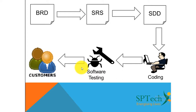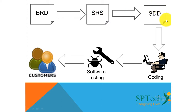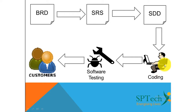This is the simple cycle of how we have come through the various stages of project development. First we had the business requirement document, which became an input for the software requirement specification. The SRS document became an input for the software design document, which is then implemented in the form of a computer program — what we call coding.